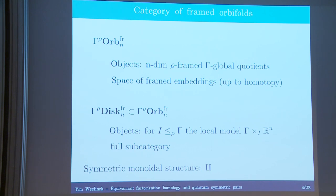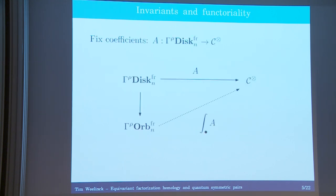This is a natural generalization of the setup of factorization homology as introduced by Ayala and Francis, so we can define our invariants in the same way. Namely, we fix an algebraic gadget called a disk algebra, which means a symmetric monoidal functor from our category of disks into our favorite target symmetric monoidal category. Then we integrate that algebraic gadget over the orbifolds by means of a left Kan extension construction.